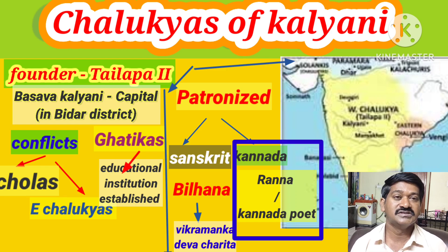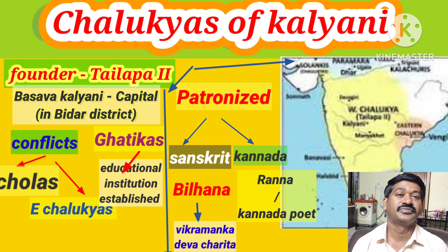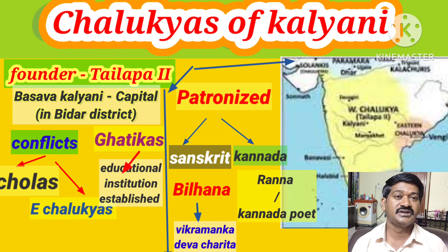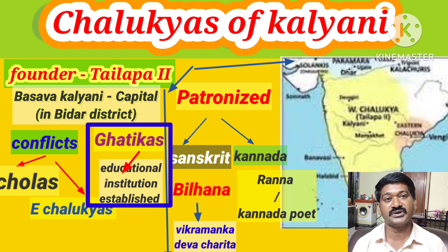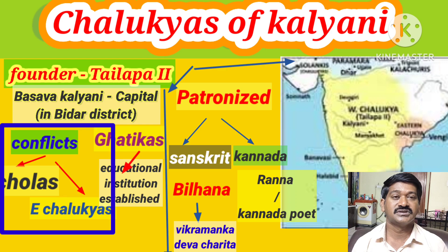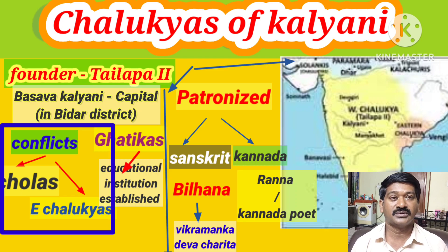In Kannada language, Ranna was the famous poet. During the Chalikyas of Kalyani period, the rulers established educational institutions called Gattikas. The Chalikyas of Kalyani rulers always fought with the Eastern Chalikyas and Chola rulers.